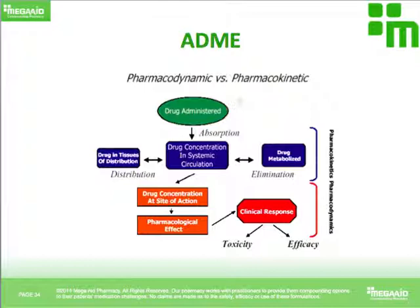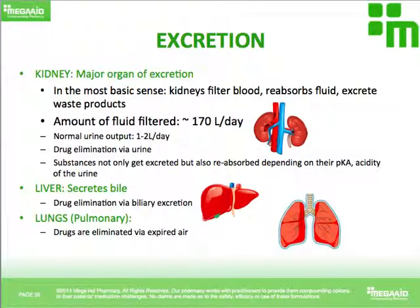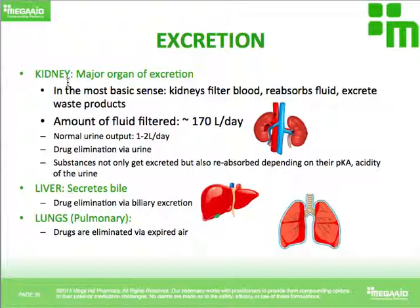Lastly, we're going to talk about the final stage of ADME, which is drug elimination. How are drugs actually eliminated from our body? Drugs are excreted via different organs. The three major organs of excretion are the kidney, liver, and lungs. Kidneys are the major organ of excretion — this is what we refer to as renal metabolism. In the most basic sense, kidneys are like filtering machines: they filter blood, reabsorb fluid, and excrete waste products.